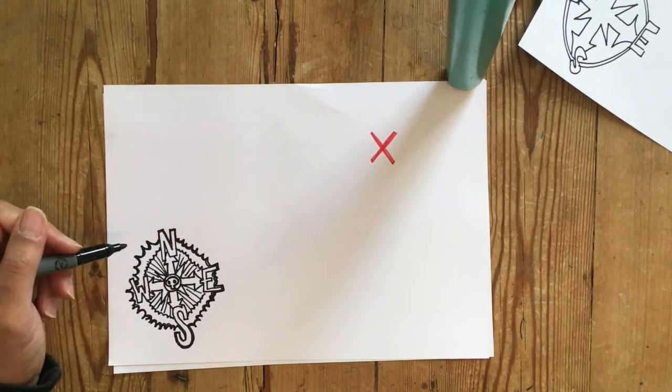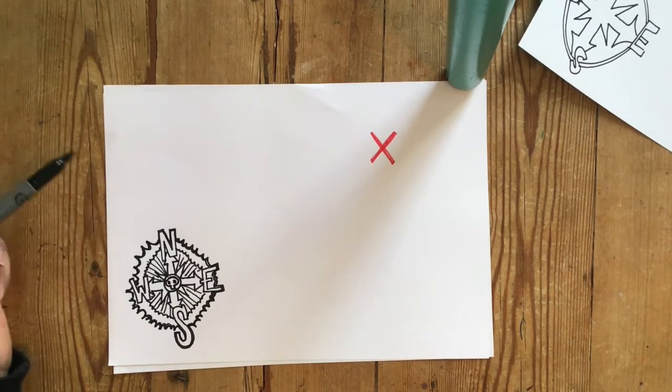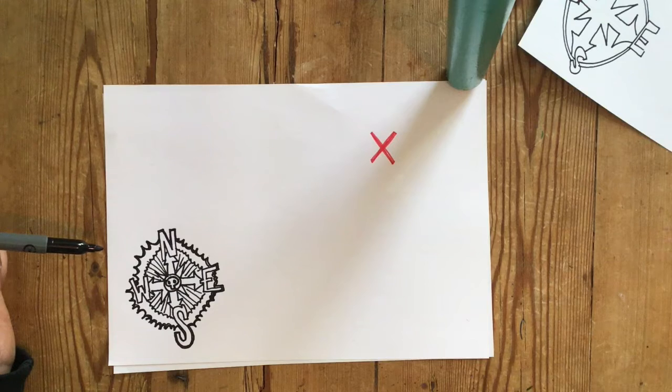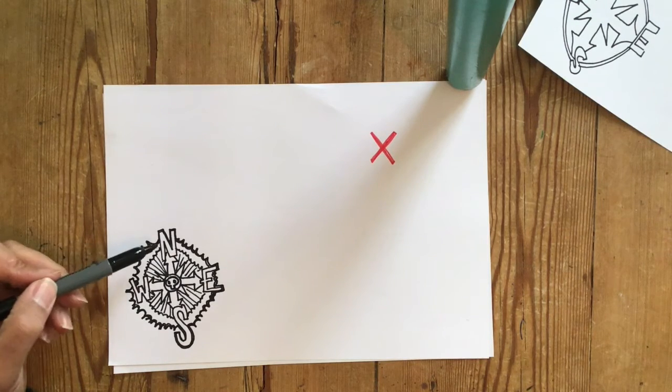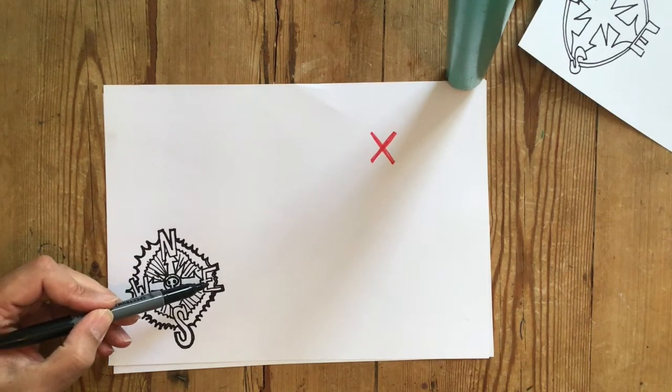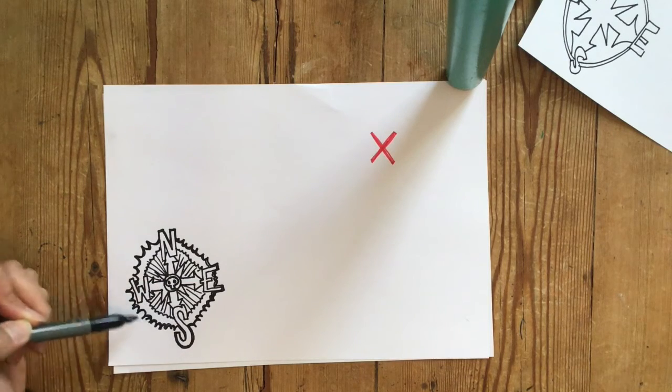Do you know what the letters on a compass rose stand for? Yes, that's right, north, east, south, west.